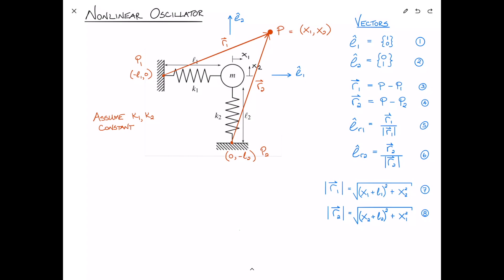So now using vectors makes this dead simple. Consider the deflection or the stretch in each of the springs. Considering first spring 1, or delta 1, we can take the magnitude of r1, which is the final length of the spring, and subtract from that l1, the initial length of the spring. Substitution yields the square root of x1 plus l1 squared plus x2 squared minus l1. We'll number these equations 9 and 10.